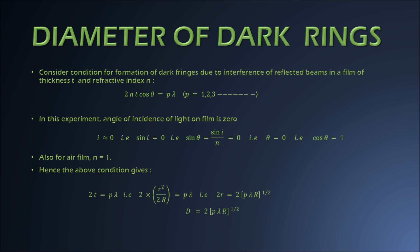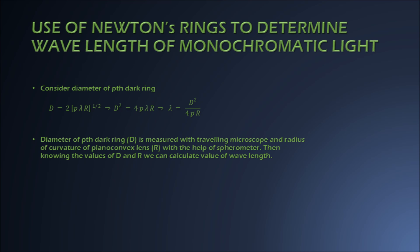The first important use of Newton's rings is to determine the wavelength of monochromatic light. For this purpose we reconsider the expression for the diameter of the pth dark ring. Using this we can derive the relation for wavelength λ. It is clear from this relation that by knowing the diameter of the dark ring and the radius of curvature of the plano-convex lens, the wavelength of monochromatic light can be calculated very easily.